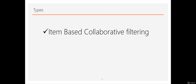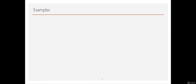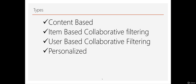There are several types of recommendation systems that differ in the way recommendations are offered. We have item-based collaborative filtering, content-based recommendations, user-based collaborative filtering, and personalized recommendations. There are some fancy terms here — the main one being collaborative filtering.